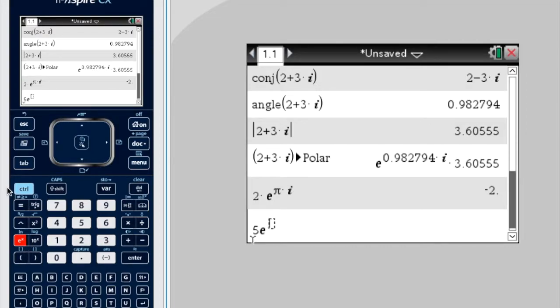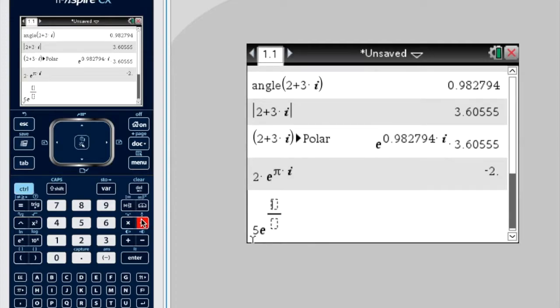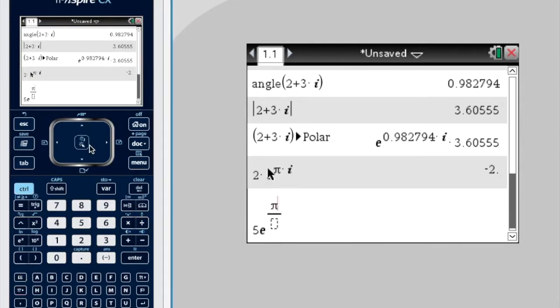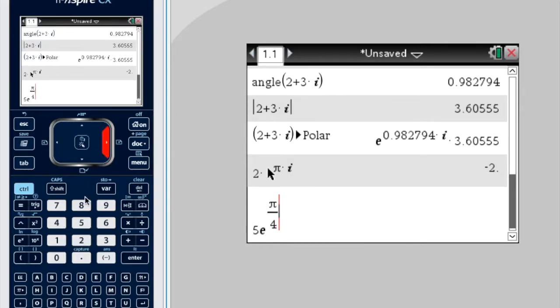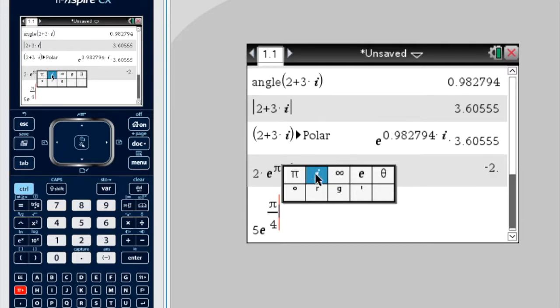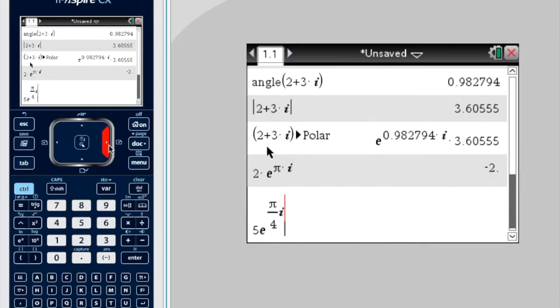Actually, let's go, ctrl, divide, pi over 4. And then times it by i. Okay, let's press enter.